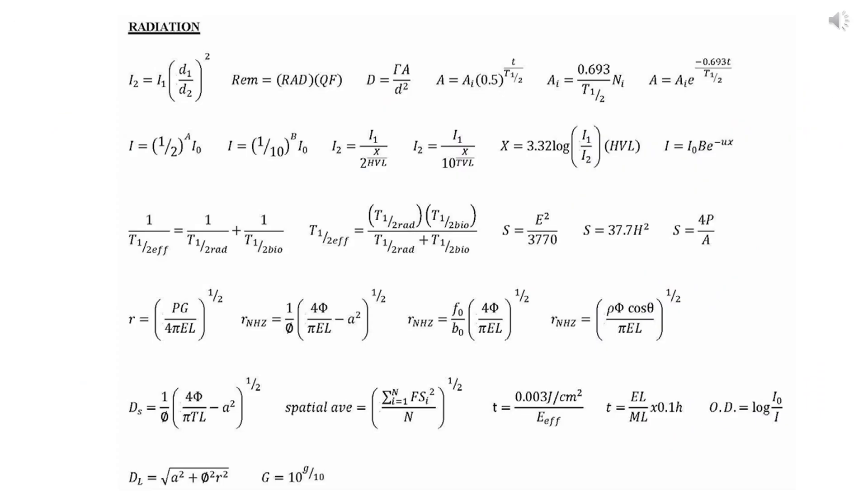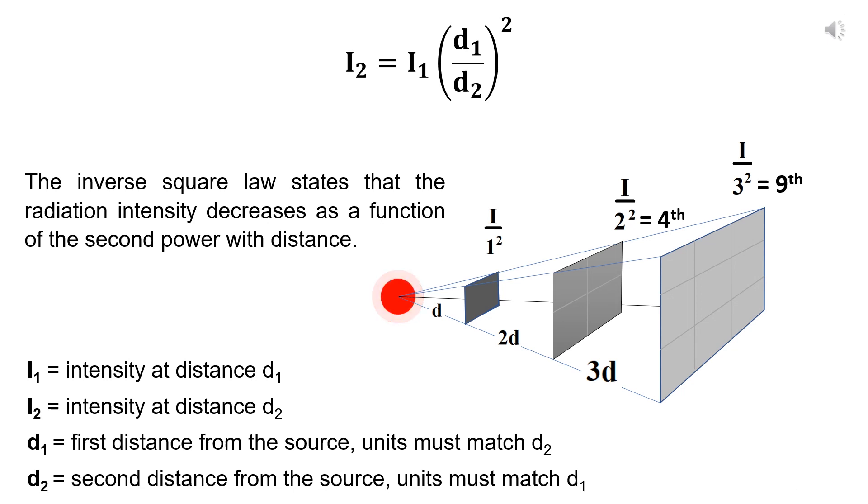The radiation chapter has 28 equations. Let's start with the first equation. This first equation is known as the inverse square law, which states that the radiation intensity decreases as a function of the second power with distance.